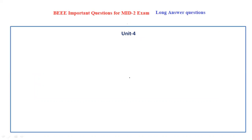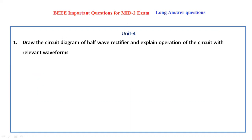Now if we look at the fourth unit, the topic is rectifiers. An important long answer question is: draw the circuit diagram of the half wave rectifier and explain the operation of the circuit with the relevant waveforms. In this, you have to explain first what is a half wave rectifier, then the circuit diagram, its waveforms, and the parameters. Note that if the question asks only for waveforms, you explain up to waveforms only.